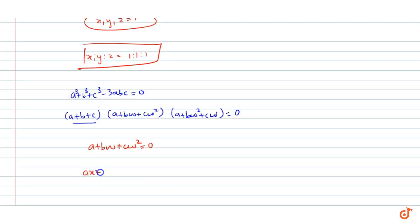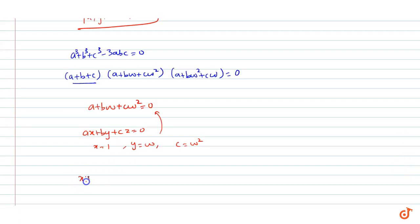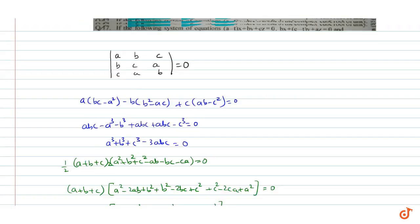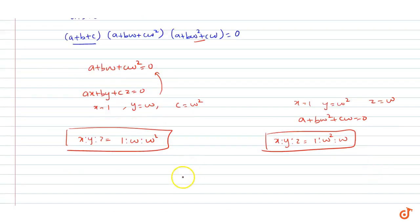तो अगर हम देखें ax + by + cz = 0 में x = 1, y = ω और z = ω² रखते हैं, तो हमें यह condition वापस मिलेगी. That means x:y:z = 1:ω:ω² भी हो सकता है. और अगर हम x = 1, y = ω², z = ω रखें, तो हमें मिलेगा a + bω² + cω = 0, that is also a valid answer. इसका मतलब x:y:z = 1:ω²:ω भी हो सकता है. और यही तीन हमें प्रूफ करना था. So, hence proved — this is our solution.